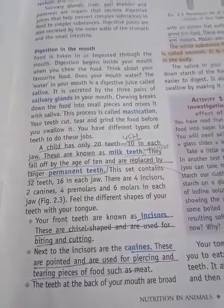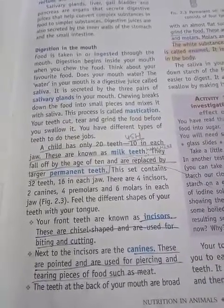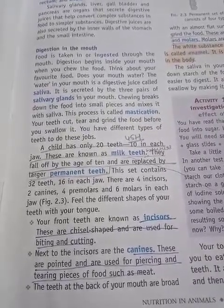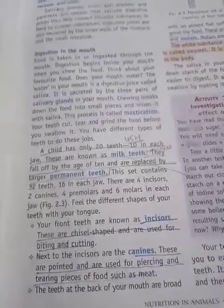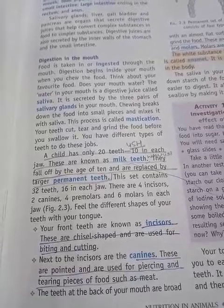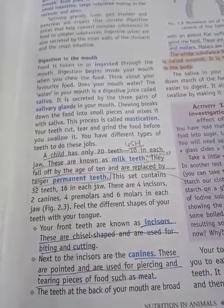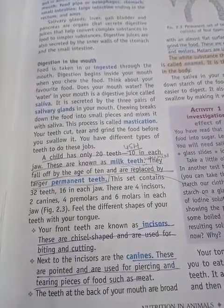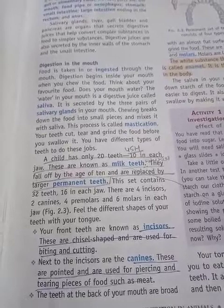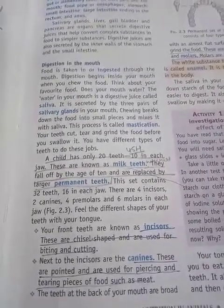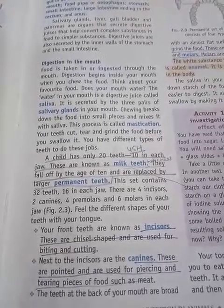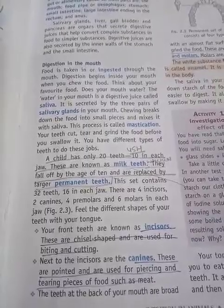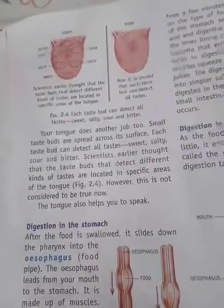Now let us learn about milk teeth and permanent teeth. In human beings, teeth grow twice. The first set of teeth that grow during infancy are called milk teeth, also called temporary teeth. These teeth get loosened and fall off at the age of six to eight years. When milk teeth fall off, a new set of teeth grows in their place. This second set is called permanent teeth because they remain till old age, but if these teeth fall, no new teeth grow in their place.